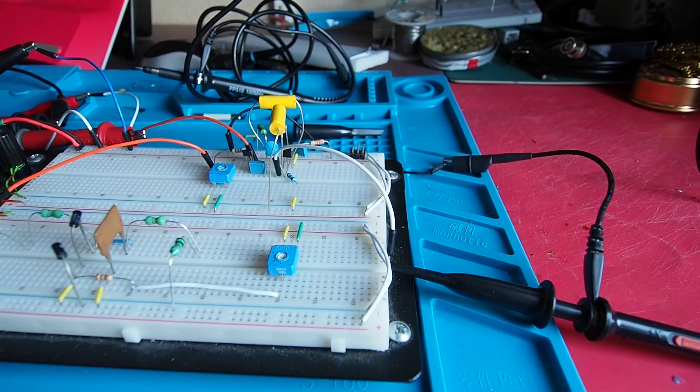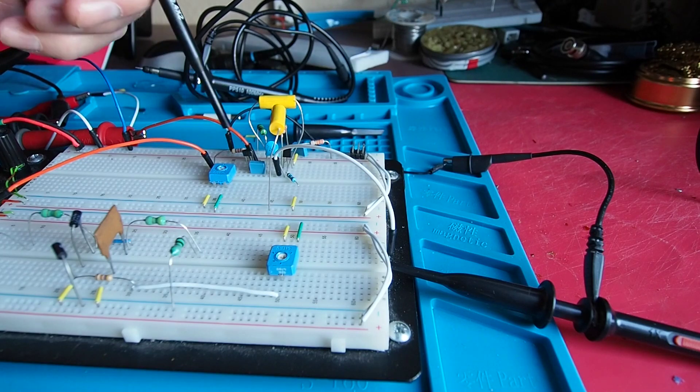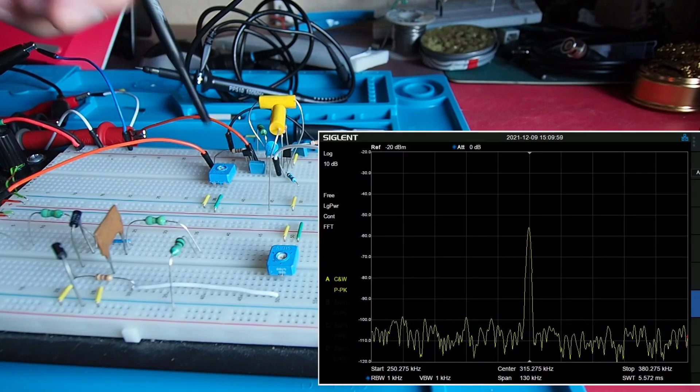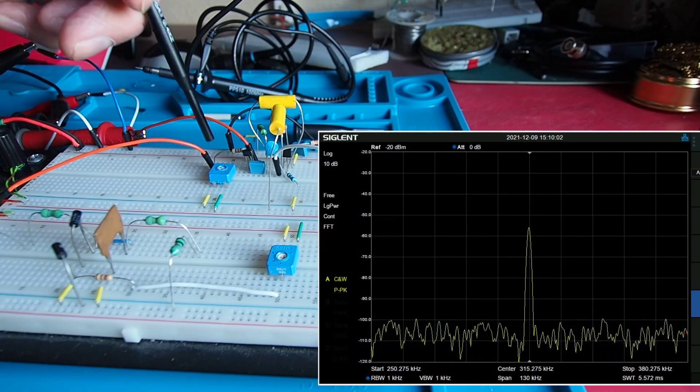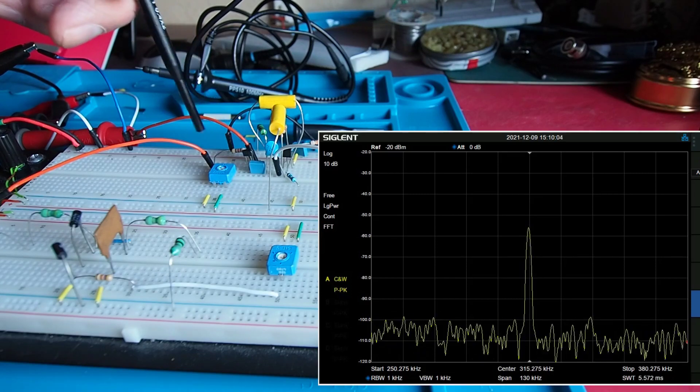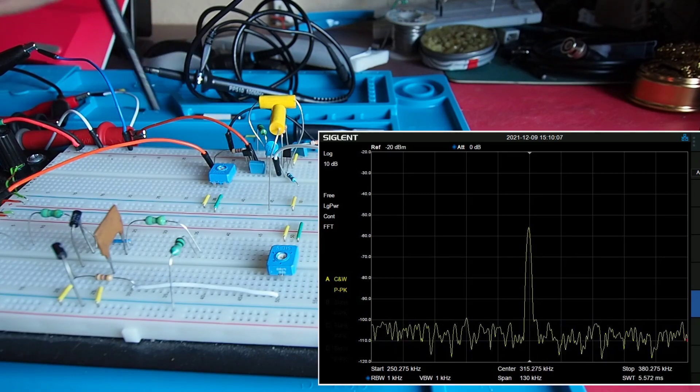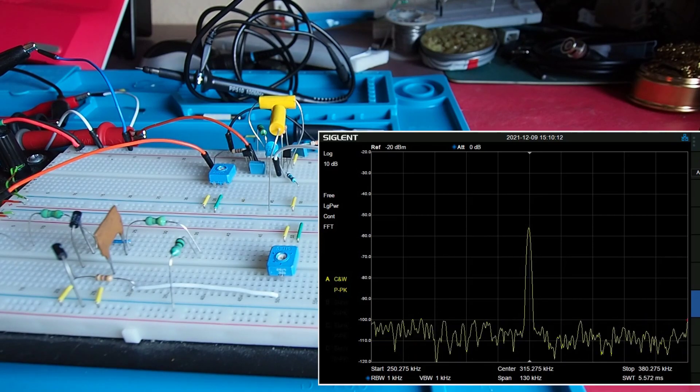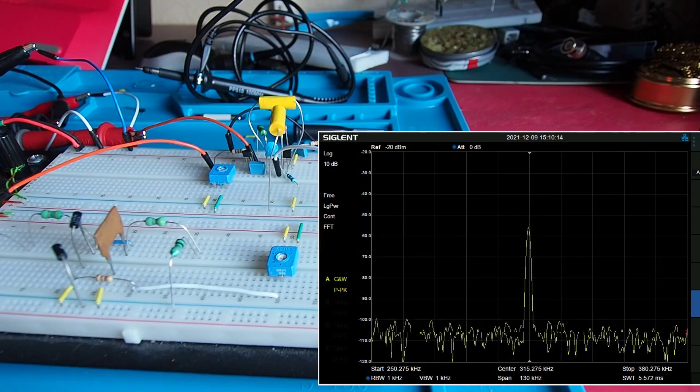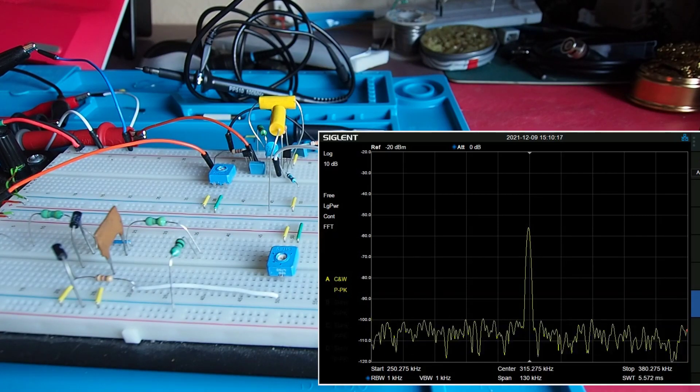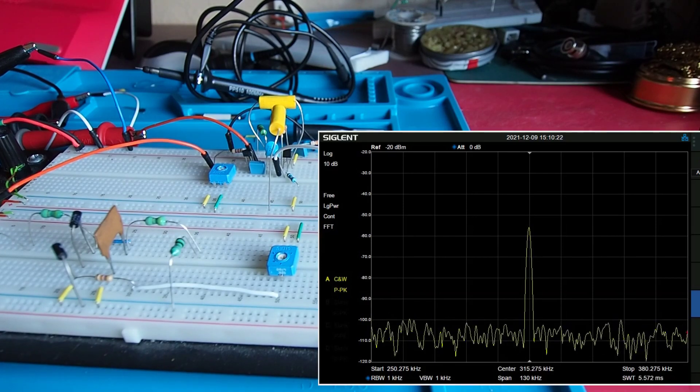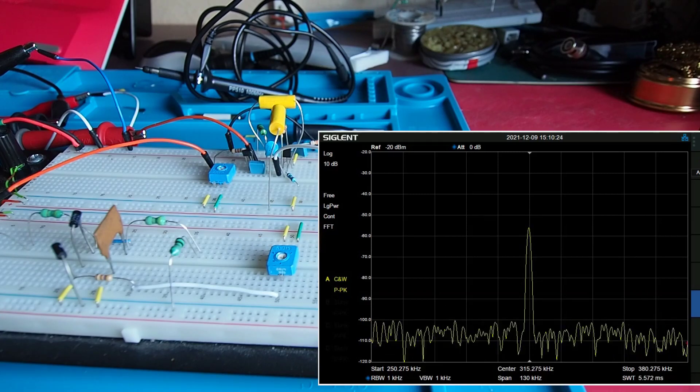Okay here we are back with the VCO as before but with one slight modification instead of providing the varactor bias voltage from this potentiometer I'm now providing it from my signal generator still through the 47k resistor to present it with a reasonably high impedance. What I'm going to do with the signal generator is produce a varying DC voltage to simulate if you like some kind of audio modulation and I'm going to do it at a fairly low frequency so hopefully you're going to be able to see the frequency modulation actually going on.